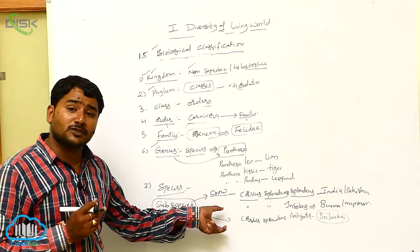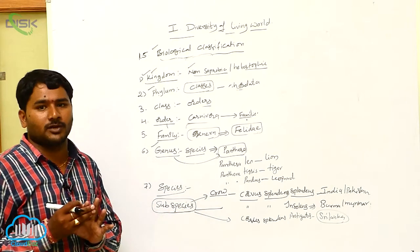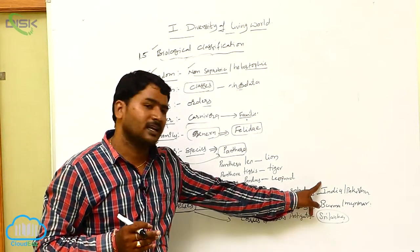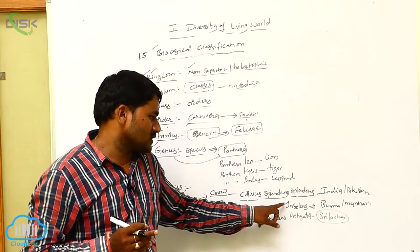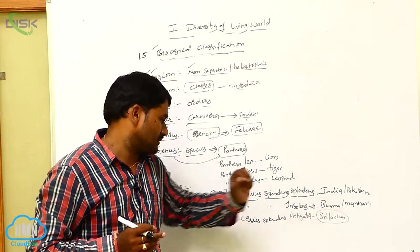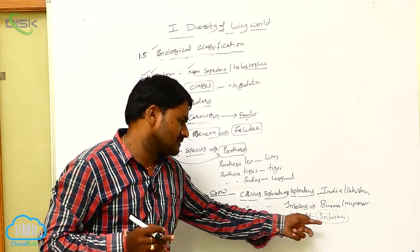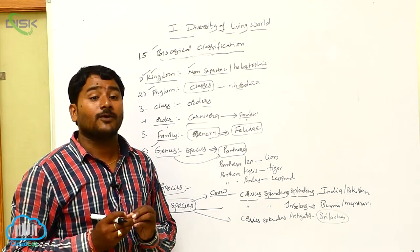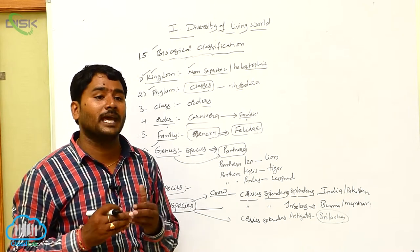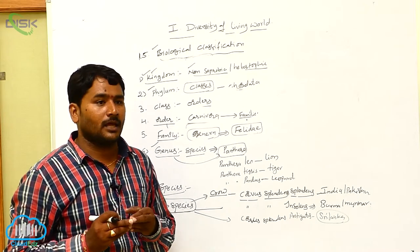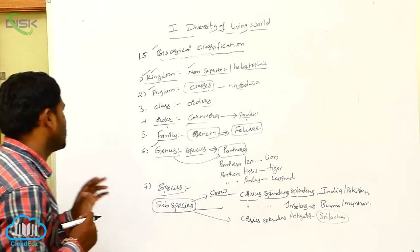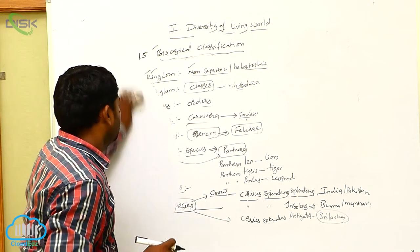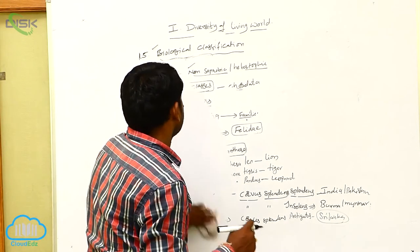These are the subspecies which are geographically isolated. Corvus splendens splendens lives in India, Corvus splendens insolens lives in Burma or Myanmar, and Corvus splendens protegatus lives in Sri Lanka. Finally, these subspecies will form new species. That is hierarchical classification.